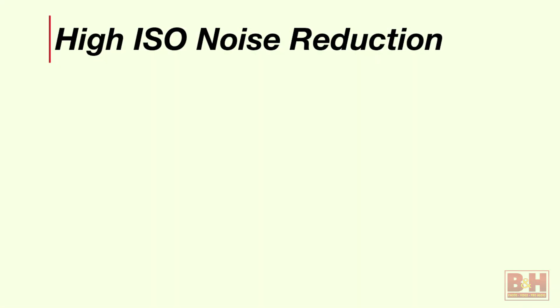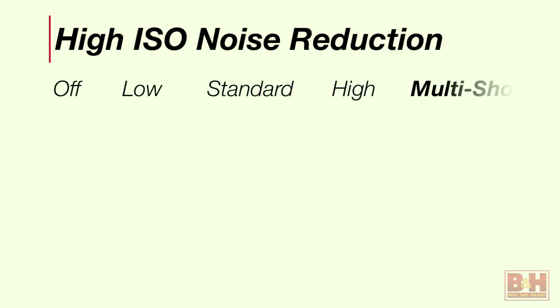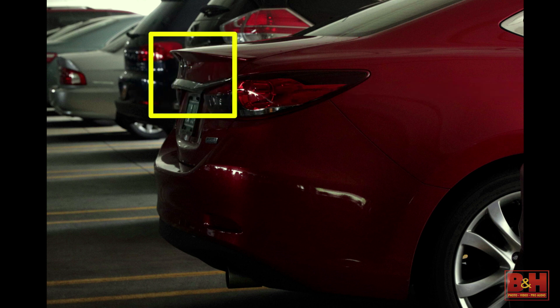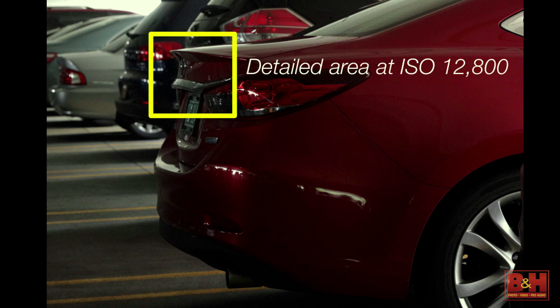The camera has high ISO noise reduction built in. Many of you will do your own noise reduction in third-party programs like Lightroom. But in terms of what the camera offers — and Canon software — you have four options. One you may not have seen before is multi-shot noise reduction. I'm going to show you a sample image and look at a detailed area of it.